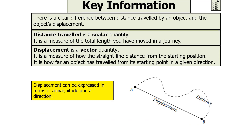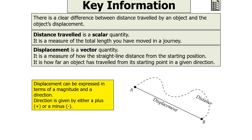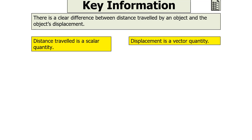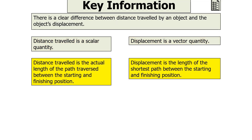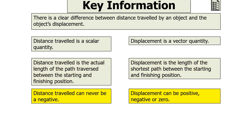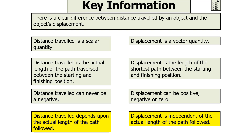Displacement can be expressed in terms of a magnitude and a direction, as it's a vector. Direction can be given as a positive or negative value depending on the situation. Distance travelled is the actual path length traversed between the starting and finishing positions, whilst displacement is the length of the shortest path between them. Distance travelled can never be negative, whilst displacement can be positive, negative or zero. Distance travelled depends on the actual path followed, but displacement is independent of the path.